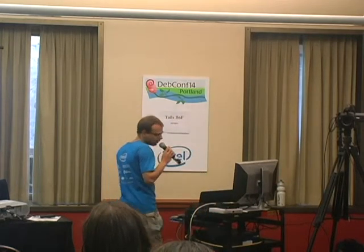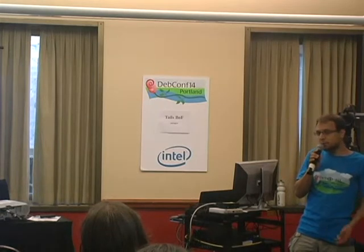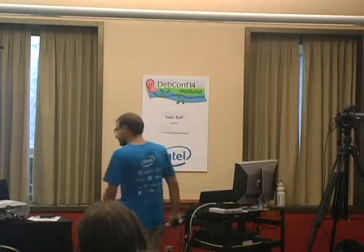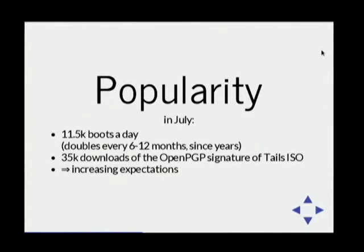In July we also had 35,000 downloads of the OpenPGP detached ISO signature, which means probably at least 35,000 ISO downloads — and probably many more, because most users don't really check the signature, because OpenPGP sucks. These numbers tend to go higher every day. The number of boots per day has doubled between last October and July, and it's been doubling every 6 to 12 months for years. It's not just the Snowden effect.